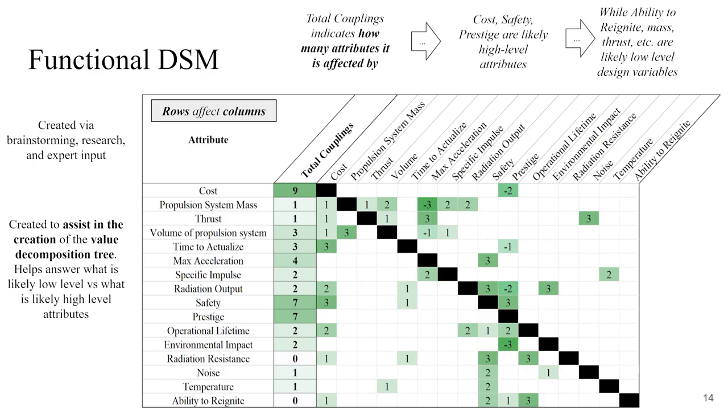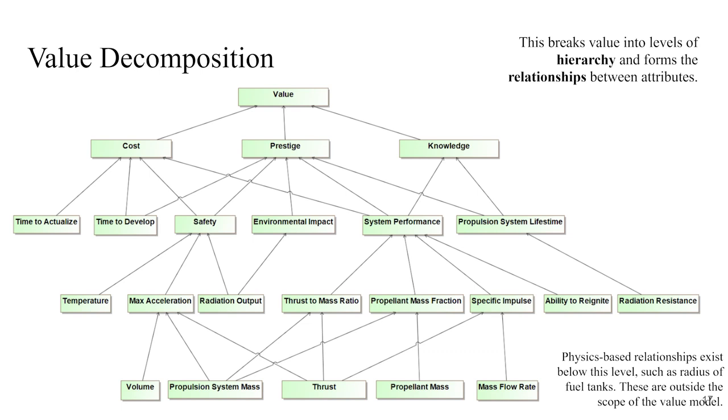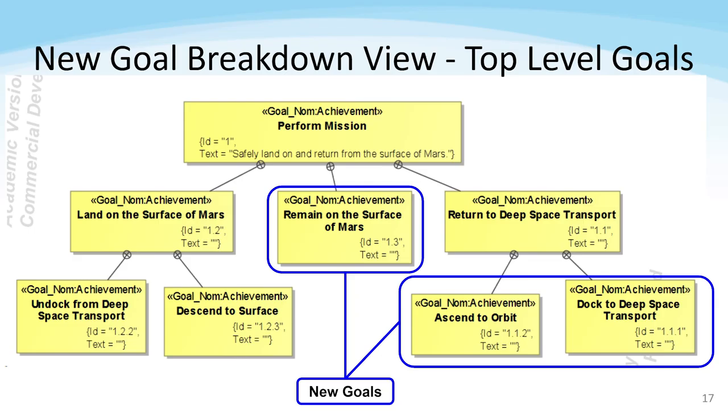A variety of methodologies founded on systems engineering were utilized to achieve the deliverables. Design structure matrices captured the connections between attributes. Value decomposition trees depicted the hierarchical nature of the value model. Goal function trees described and quantified the success or failure of the mission. A value model was the end result of all these methodologies working together.